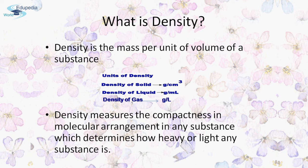Density can be determined by dividing the mass of the substance by its volume. The units of density depend on the physical state of matter: for solids it is grams per cubic centimeter, for liquids it is grams per milliliter, and for gases it is grams per liter. In other words, density is also defined as the measure of compactness in the molecular arrangement of any substance.